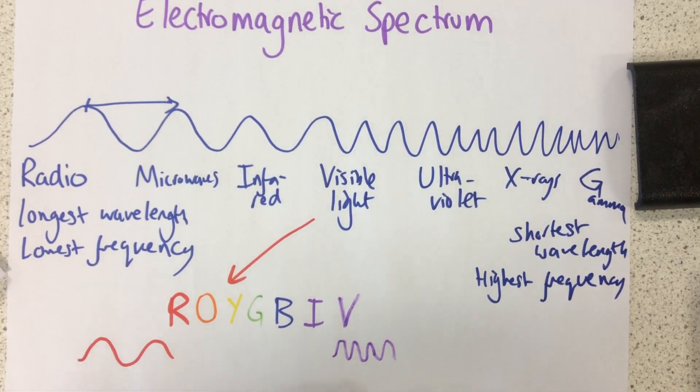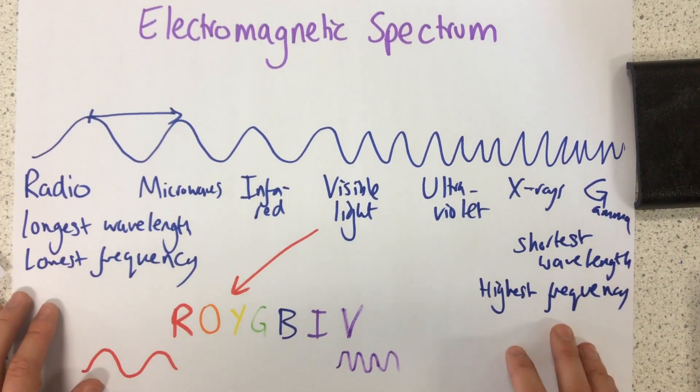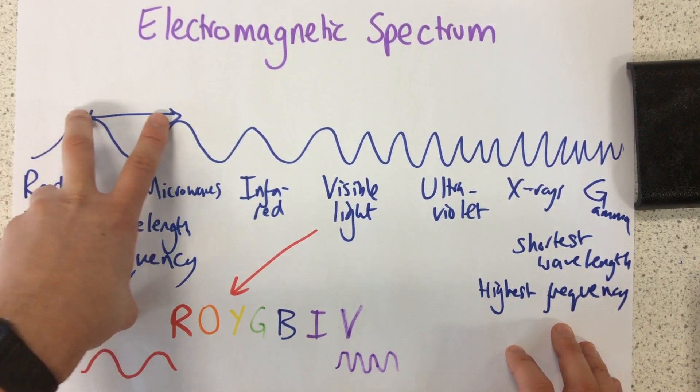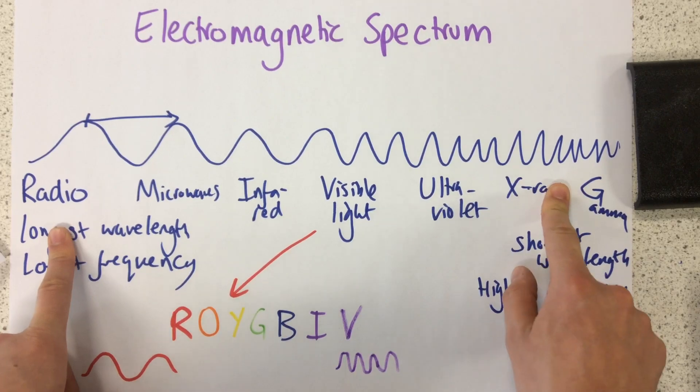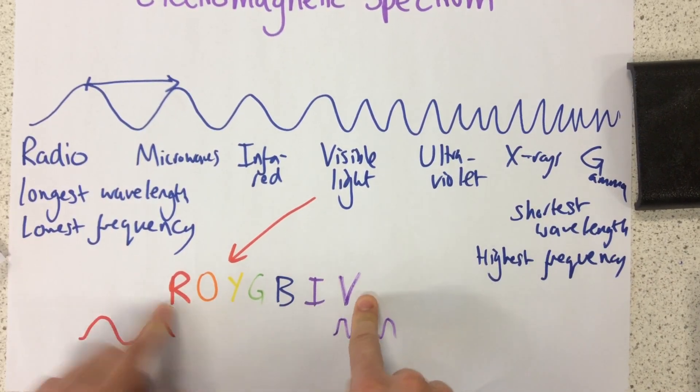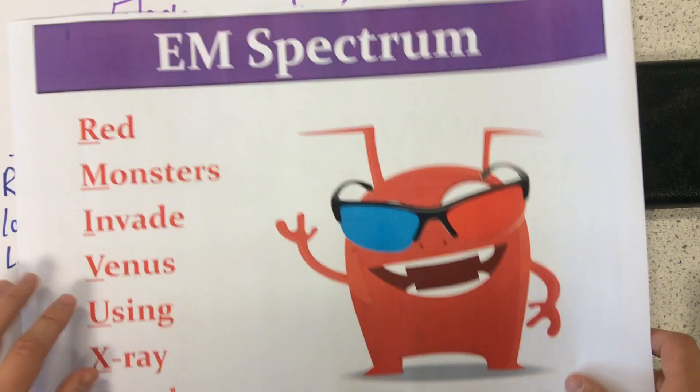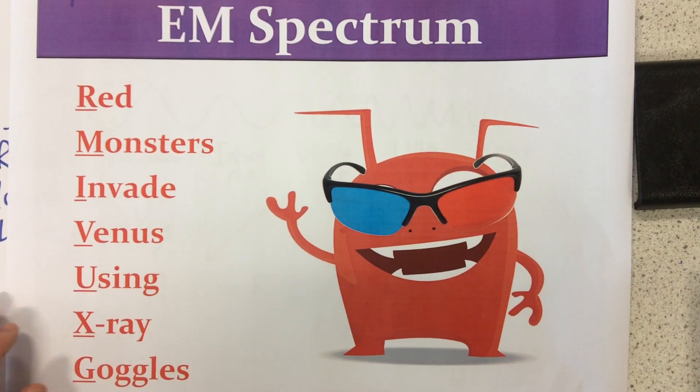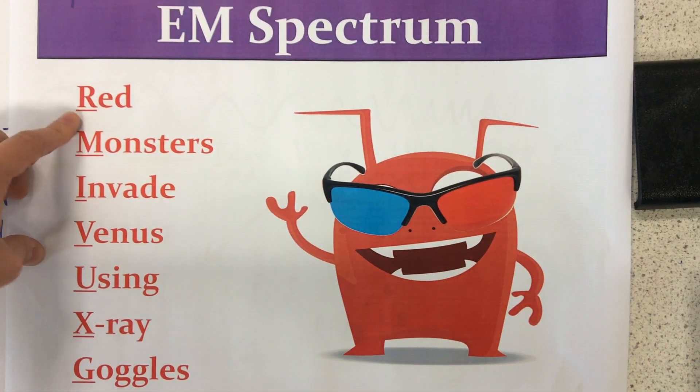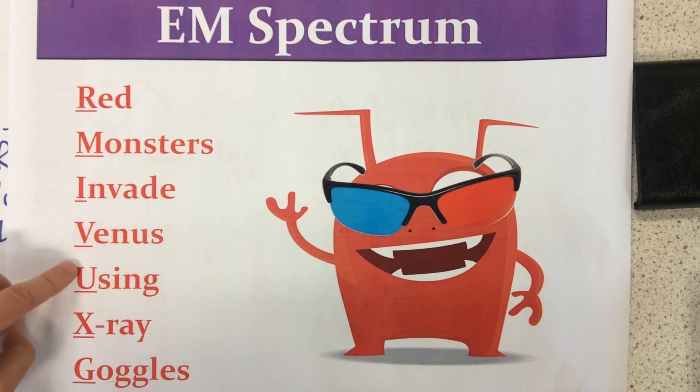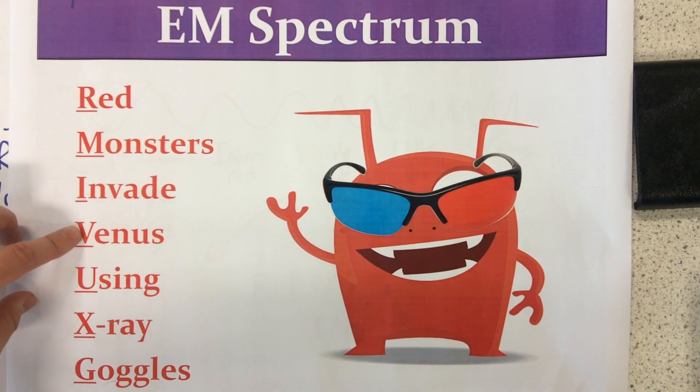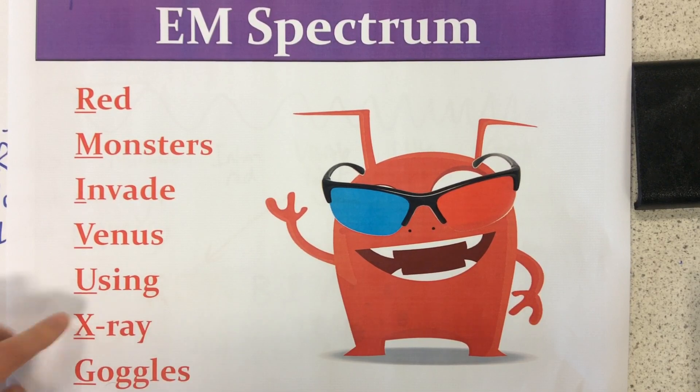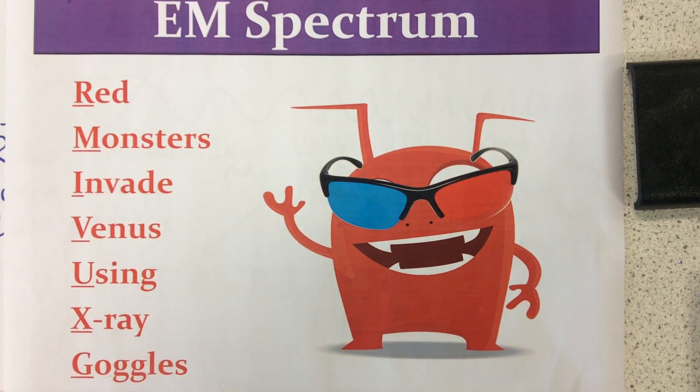So, those are essentially the different, that's the basic overview of the electromagnetic spectrum based on wavelength and frequency, the different parts of the spectrum, including the different parts of the visible light spectrum, and this technique that should hopefully help you remember. Red Monsters Invade Venus Using X-Ray Goggles: Radio Waves, Microwaves, Infrared, Visible Light, Ultraviolet, X-Rays, Gamma. Thank you.